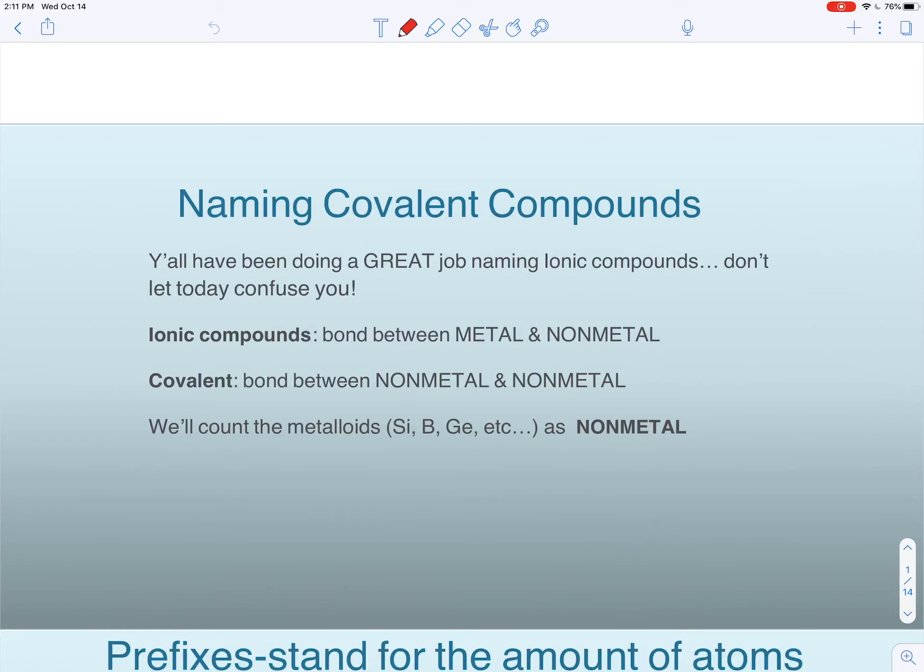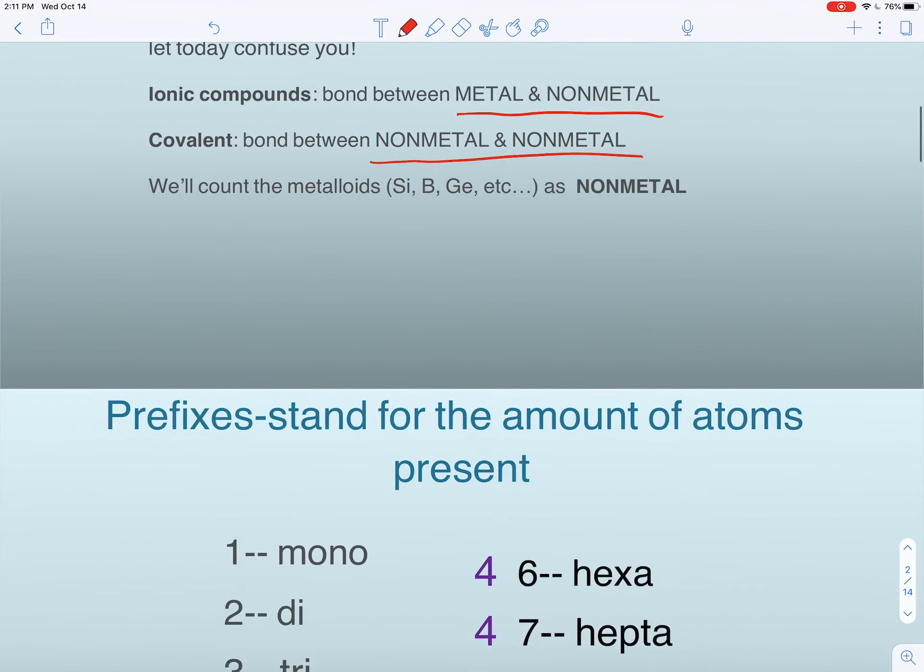Remember the difference between ionic and covalent is that ionic was between a metal and nonmetal. Covalent bonds are formed between nonmetals. We'll count metalloids as nonmetal so they would be named as covalent compounds.